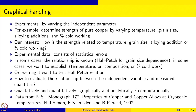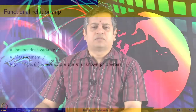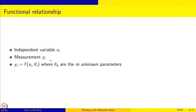From NIST Monograph 177, 'Properties of Copper and Copper Alloys at Cryogenic Temperatures', there is a whole bunch of data on all these aspects, which we will be using extensively in this session. To describe what we are trying to do: there are independent variables x_i and we are making measurements y_i, where y_i is related to x_i, but there might also be other unknown parameters that go into this expression, which we need to estimate and establish.